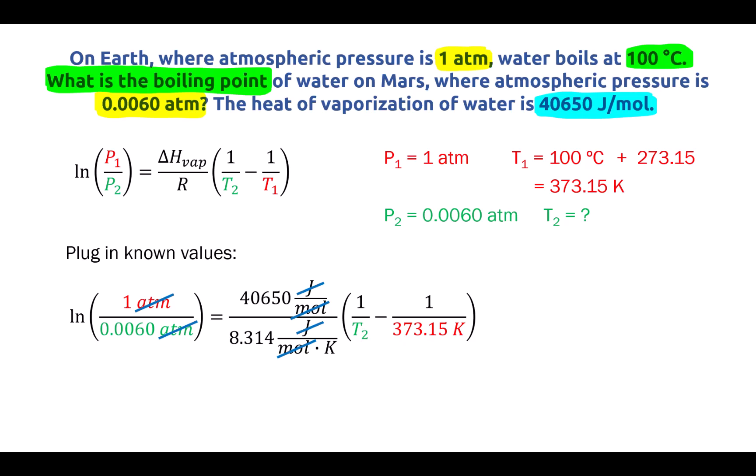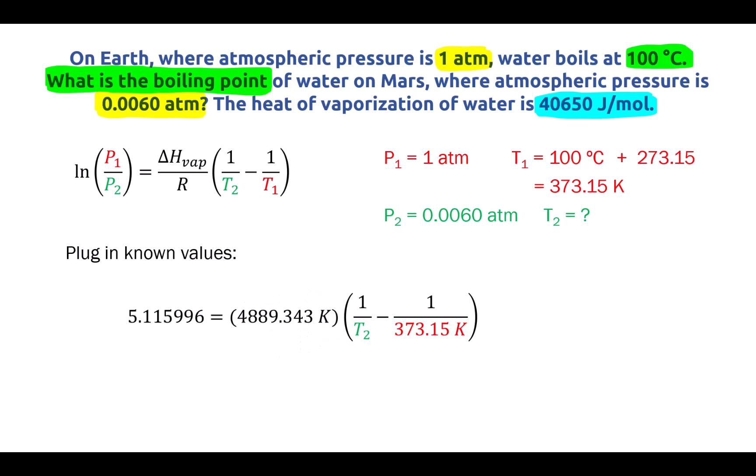The left side of the equation is then going to be equal to 5.115996. I'm not gonna round that until the end of the question, and I can simplify that fraction on the right side down to 4889.343, and Kelvin are the only units left over at that point. I'm also going to compute my value for 1 over T1. That works out to be 0.00267989, and my units there are inverse Kelvin or Kelvin to the minus 1.